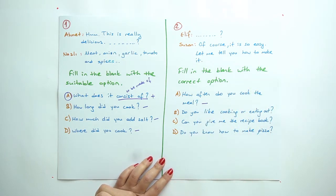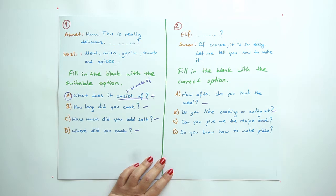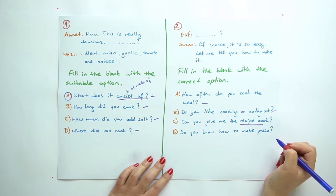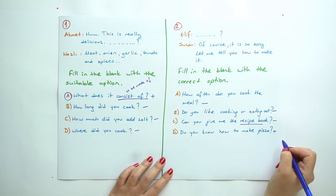Question 2: Fill in the blank with the correct option. Elif says something, and Susan: of course it is so easy, let me tell you how to make it. Option A: how often do you cook the meal? We need to see the frequency adverbs here like sometimes, always, usually, or once a week, twice a week. Do we have? No, we don't have. B: do you like cooking or eating out? No, there is a preference here.